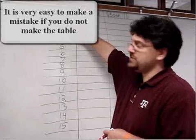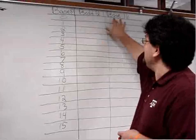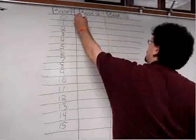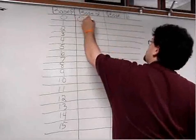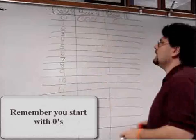First, we start with the number 0. Base 2 and base 16 is also 0. So we write four 0s up here and one 0 here.